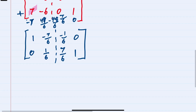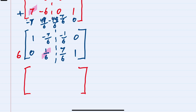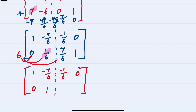Next I would like this position to become one, so I'll multiply the bottom row by six. We're not doing anything with the top row so I'll bring that down. Six times zero is zero. Six times one sixth is one. Six times seven sixths is seven. And six times one is six.